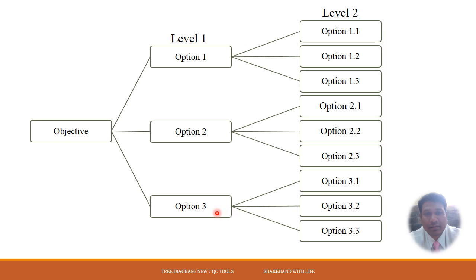From Level 1, Option 1 is further decomposed to three more options, Option 2 is further decomposed to three more options named as 2.1, 2.2, 2.3, and similarly Option 3 further decomposed to three more options. We have 9 options at Level 2 and these 9 options are easy to achieve compared to the options available at Level 1.